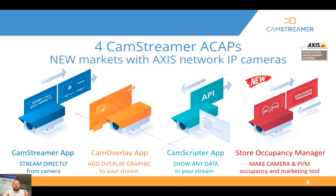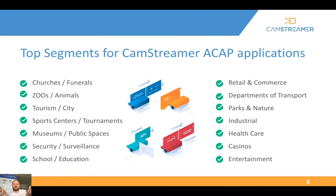At Cam Streamer we have four apps which might help with reaching new markets using Axis network cameras. Cam Streamer App is for streaming directly from the camera. Cam Overlay App adds overlay graphics to your streams. Camscriptor fetches third-party app data to show in Cam Overlay. And Store Occupancy Manager turns an IP camera and public view monitor into an occupancy and marketing tool. Top segments include churches, zoos, tourism, sports centers, museums, security, schools, retail, transport, parks, industrial, healthcare, entertainment, and casinos.